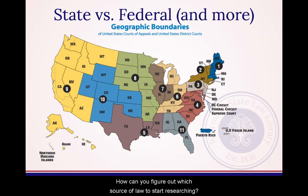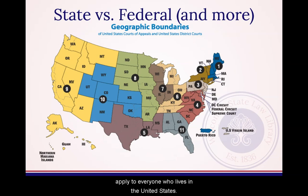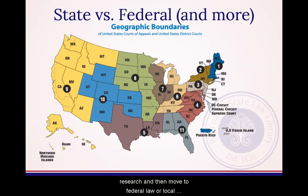How can you figure out which source of law to start researching? There aren't any foolproof formulas to figure this out. In general, you can say that federal laws apply to everyone who lives in the United States. State and local laws apply to people who live or work in a particular state, county, or municipal boundary. In general, I like to start with state law research and then move to federal law or local ordinances, depending on the topic.